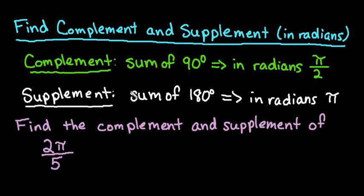And the same thing with supplementary angles. Supplementary angles have a sum of 180 degrees, so in radians the sum would be π.